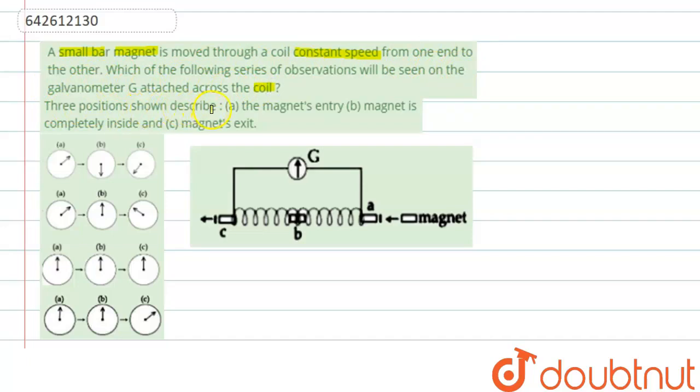Three positions shown describe: the magnet entry, magnet is completely inside, and magnet exit. So here we see that there are three conditions, and we have to find out which one should be the reading of the galvanometer.